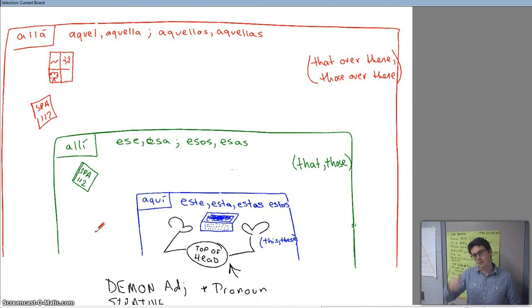Este, esta, estas, and estos are our demonstratives for these and this, being singular or being plural. When you go out a little bit farther, you have that book, that student, that computer. That and those are ese, esa, esos, and esas.